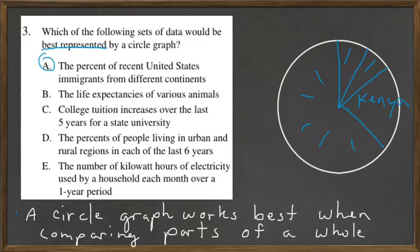Why aren't the other ones the best? Life expectancies of various animals — that would be a bar chart, comparing all the different life expectancies. College tuition increases over the last five years would work well as a line graph, because you want to compare how it's changing over time.